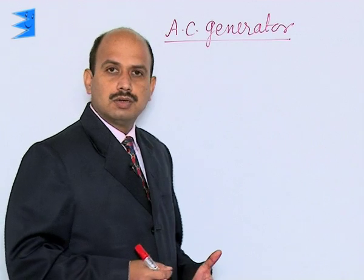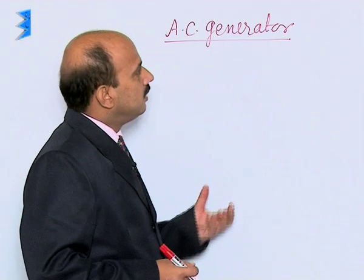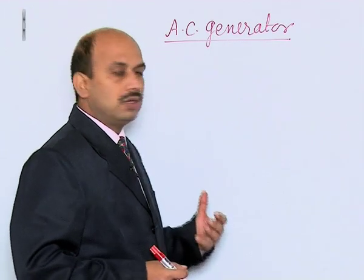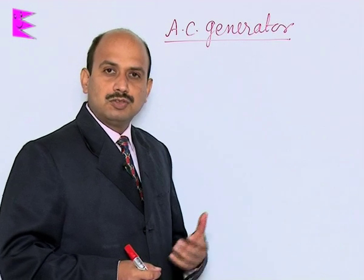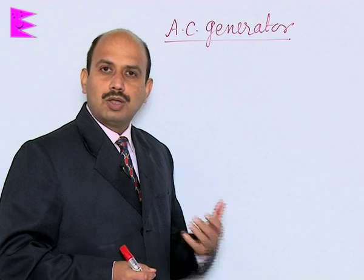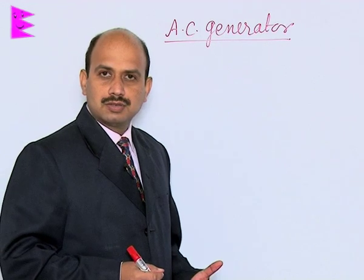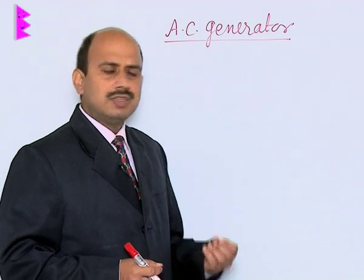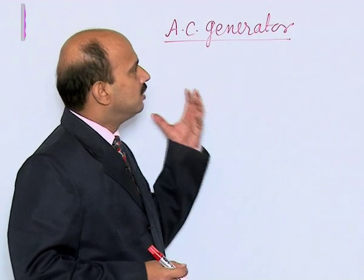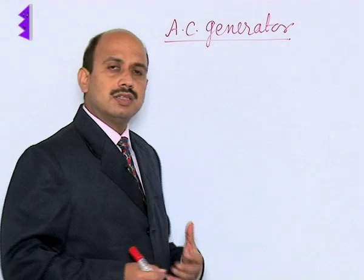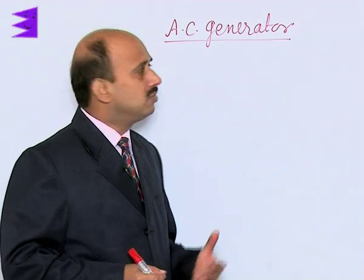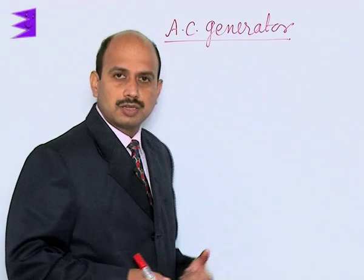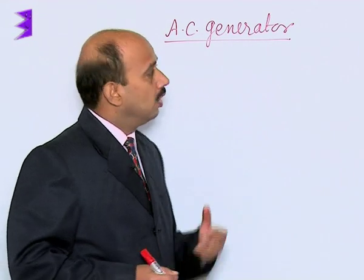An AC generator is a device which is used to produce alternating current. It is not actually a generator in the strict sense, but energy conversion takes place — its name is generator.